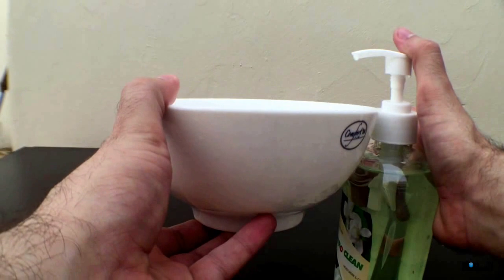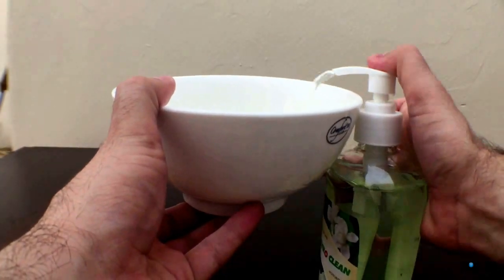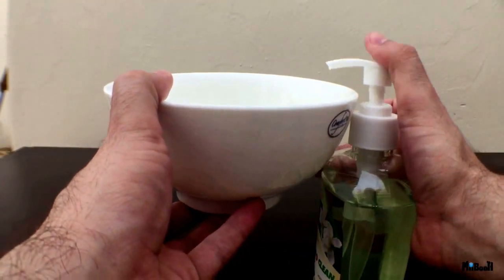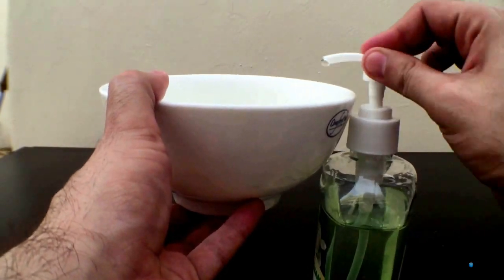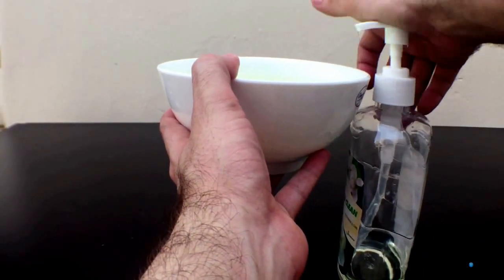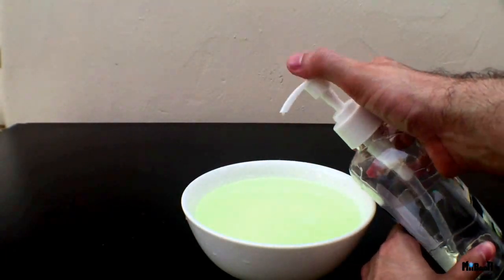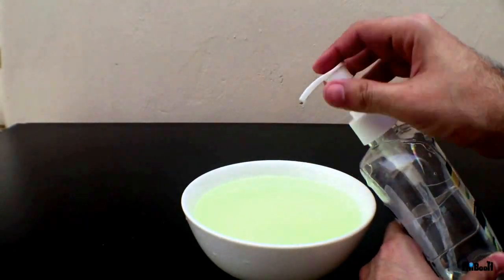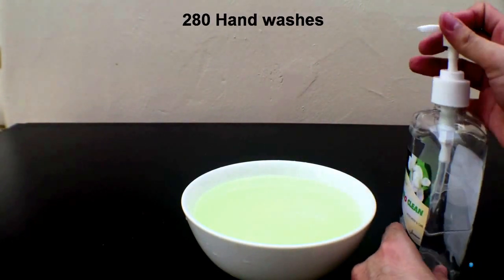Now let's do some calculations. Let's see how many hand washes does a standard 500 ml bottle give you. That's 280 ml.